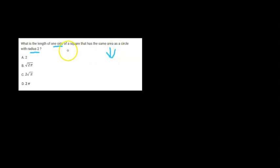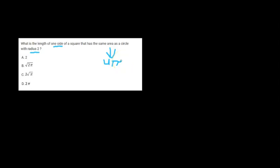The first thing we should figure out is what the area of the circle is that has a radius of 2. We know that the area of a circle is pi r squared. So if we use r equals 2, then we have pi times 2 squared, or 4 pi. Therefore the square is going to have an area of 4 pi.